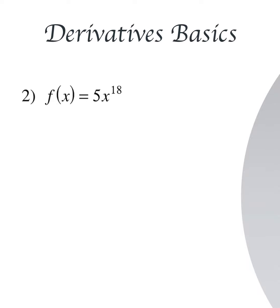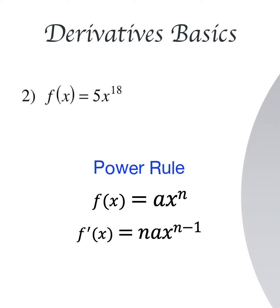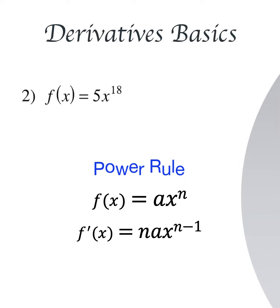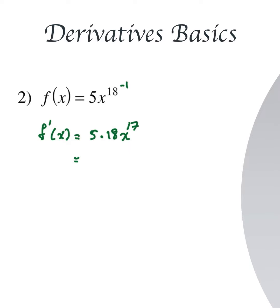Let's look at question number two. They are saying that f(x) is equal to 5x to the power 18. According to the power rule, when f(x) equals a times x to the power n, f prime of x equals n times a times x to the power n minus 1. So here f prime of x equals 5 times 18 times x to the power 17. Simplifying, 5 times 18 is 90, so f prime(x) = 90x^17.